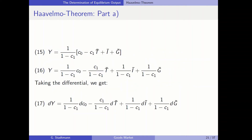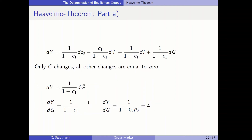We are already familiar with part A. We start with the equilibrium condition for the GDP level in equation 15, get rid of the brackets by multiplying through by the fraction, and then take the total differential. We consider that only government spending changes and all other changes are equal to zero. Putting dG on the other side of the equation, we once more get the income multiplier after an increase in government spending — GDP is up by four units when government spending is up by one unit.